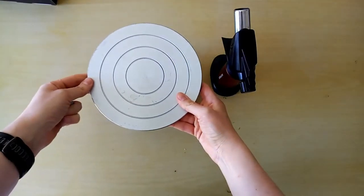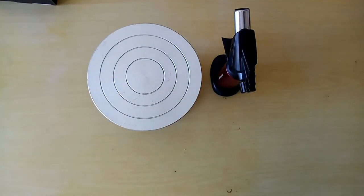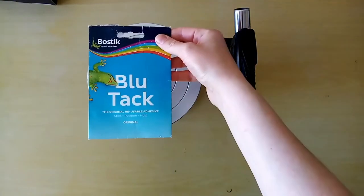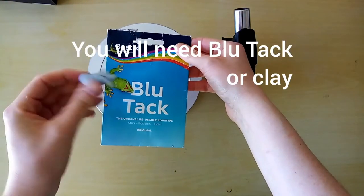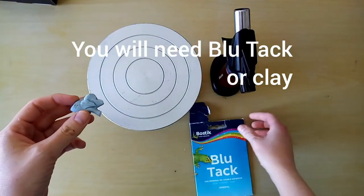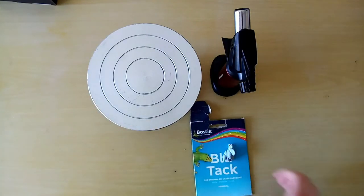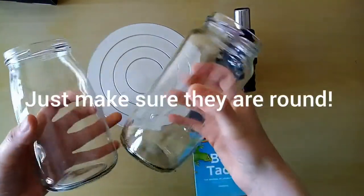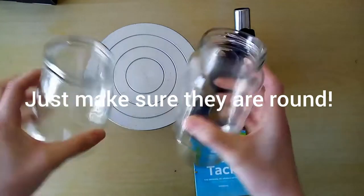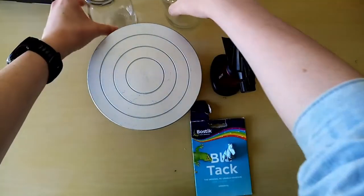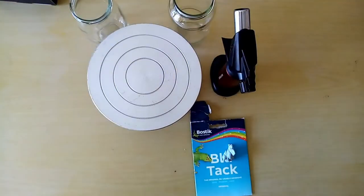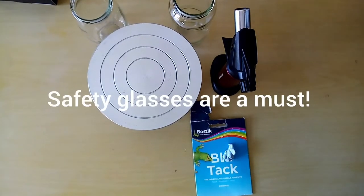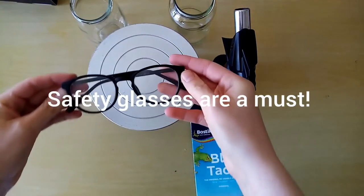You'll also need some blue tack or even a little bit of clay. That's used to actually tack down your glass piece onto the turntable so that it doesn't move. And you'll need some jars or bottles, whatever glass you can find in the recycling at home.